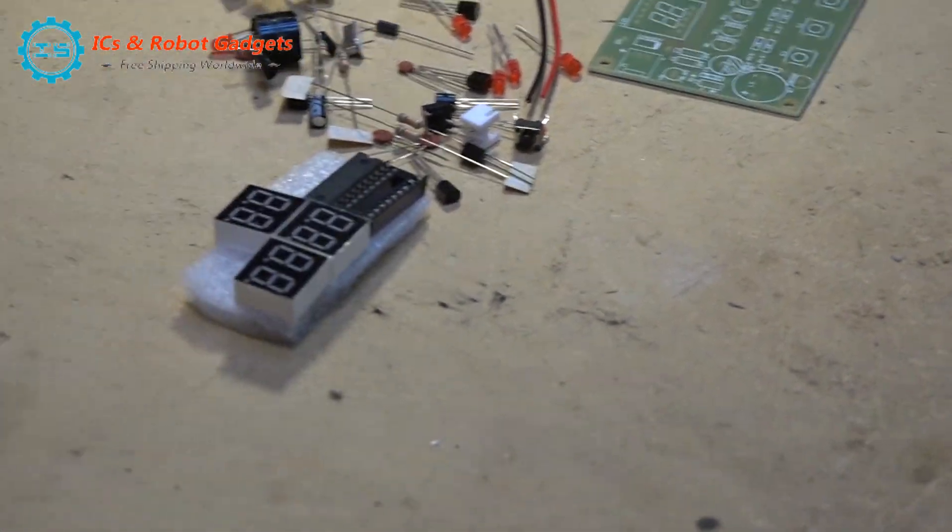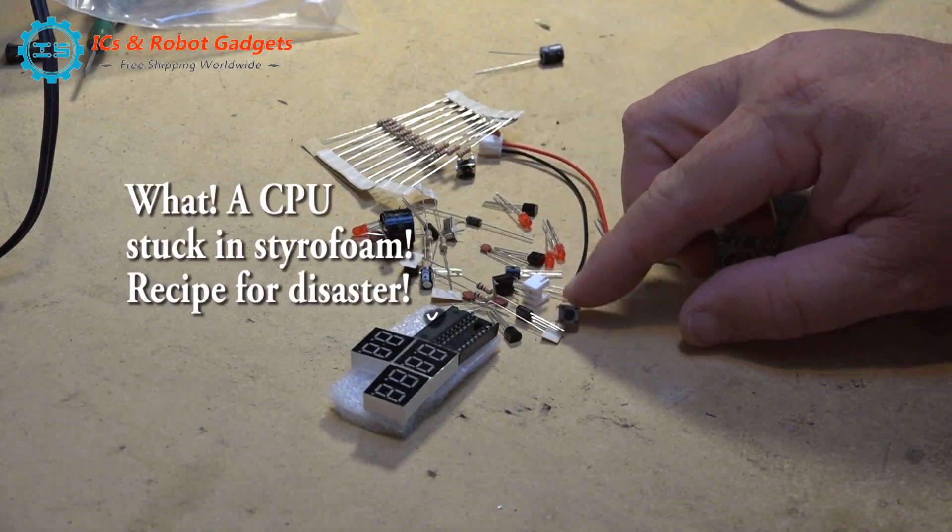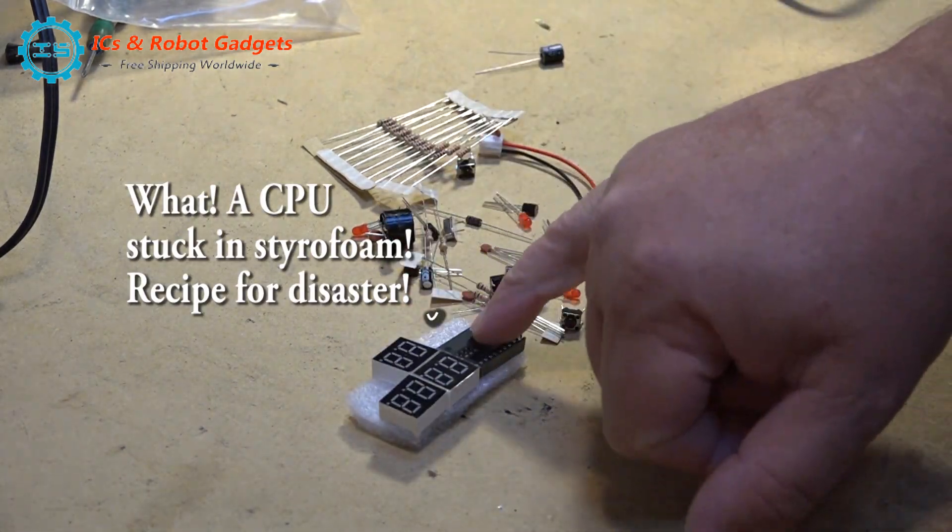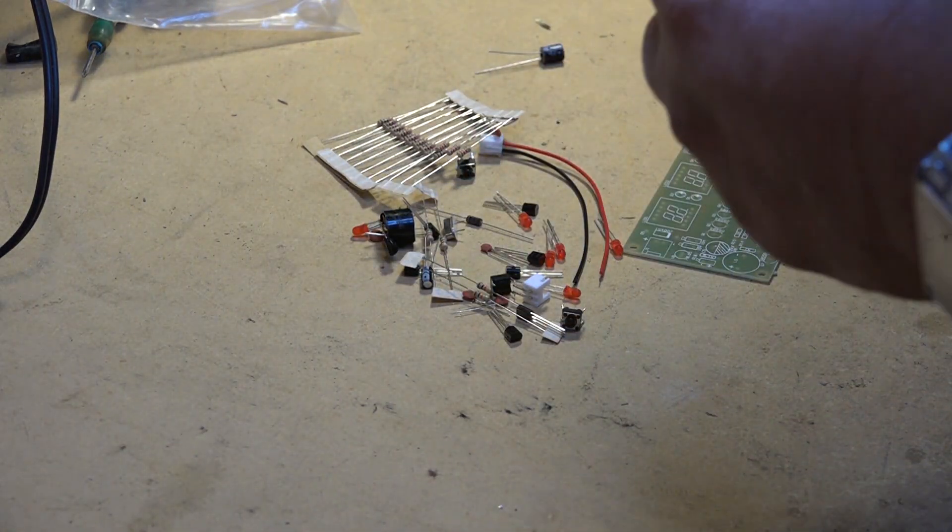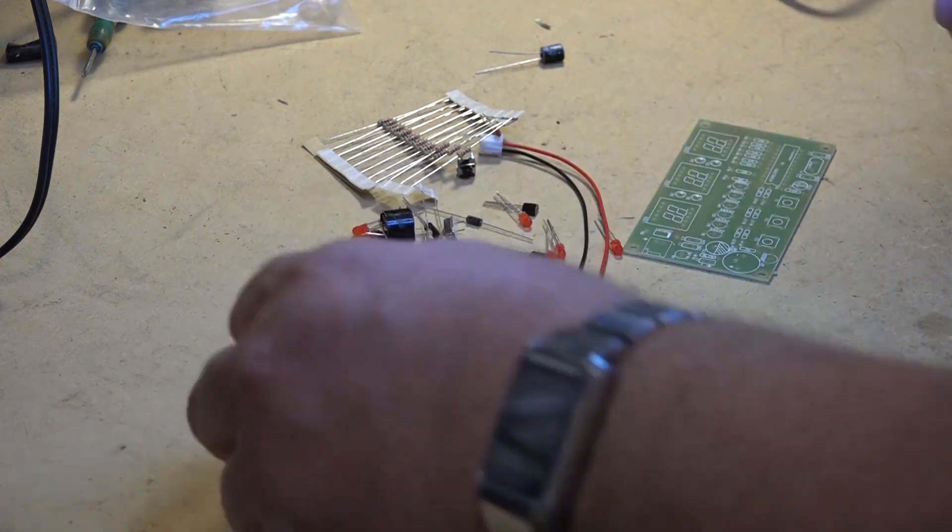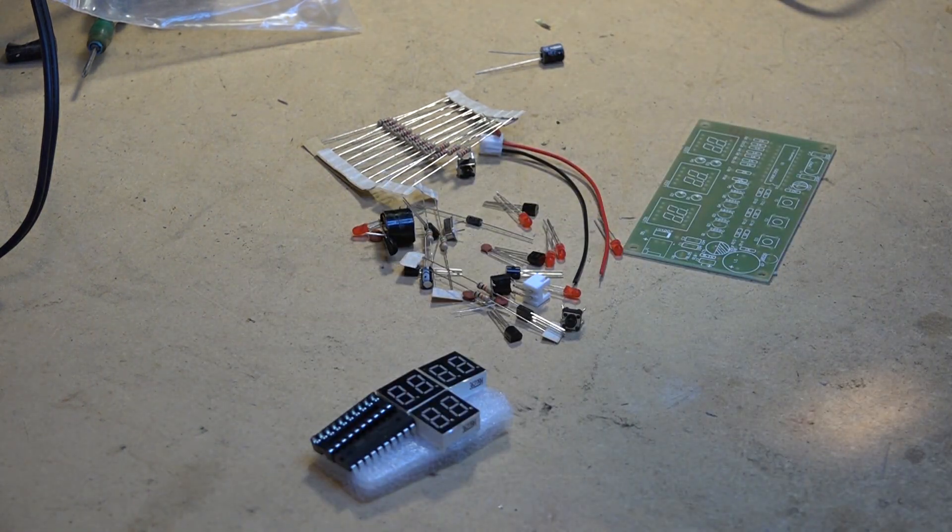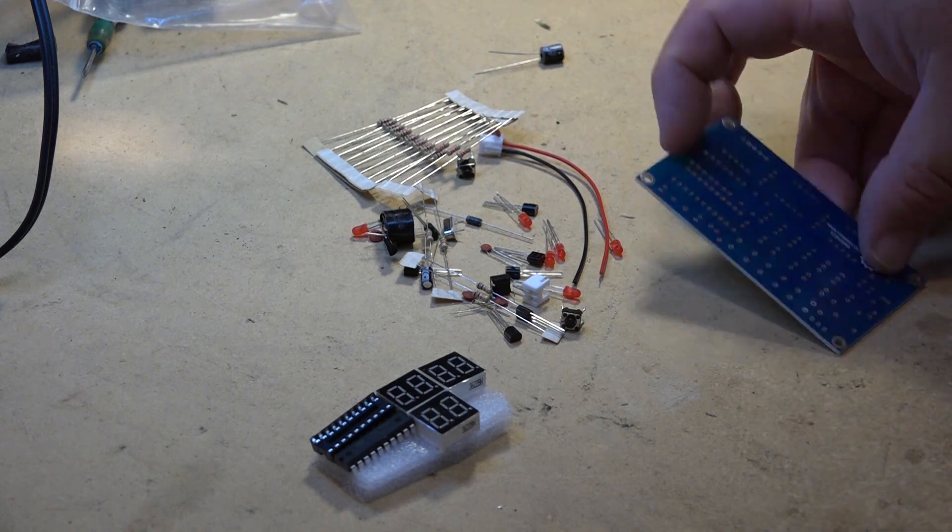This is the unboxing. Let's take a look at what's inside. This is a six-digit LED clock that comes complete with all the parts, but I couldn't find any documentation on it whatsoever. There's no assembly instructions included.